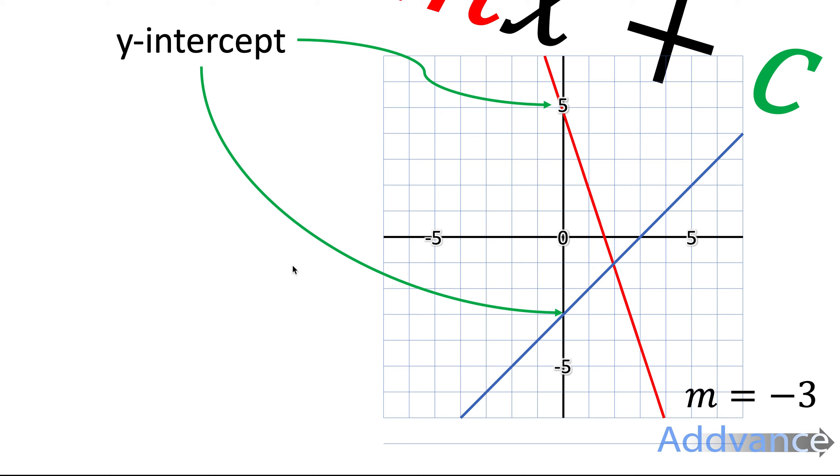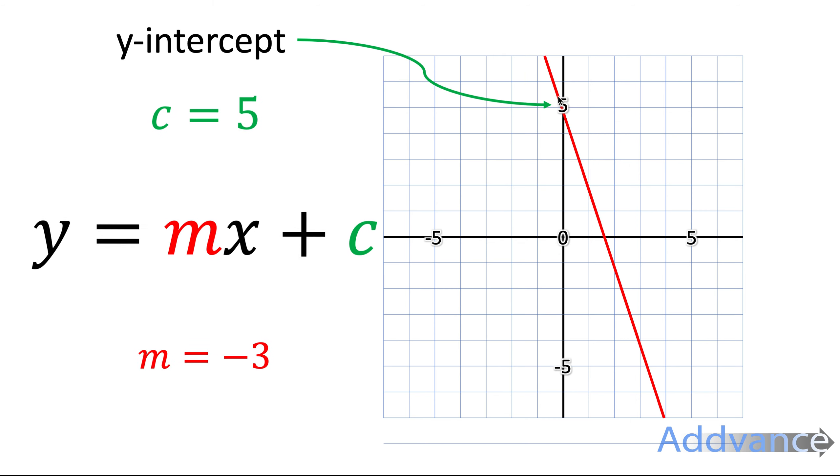We've got another line here, and here the y-intercept is minus 3. So again, it's where it crosses the y-axis. For this red line here, we've already worked out the gradient, it was minus 3. And we know it crosses the y-axis at 5.